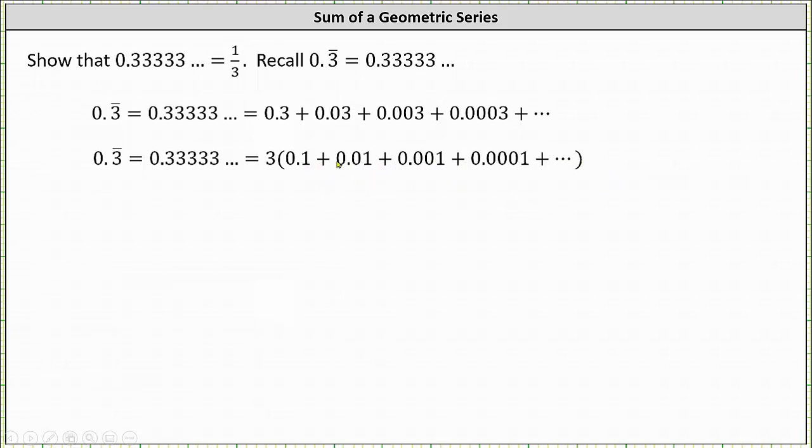We'll write the decimals as fractions. 0.1 is equal to 1 tenth, 0.01 is 1 hundredth, 0.001 is 1 thousandth, and so on.